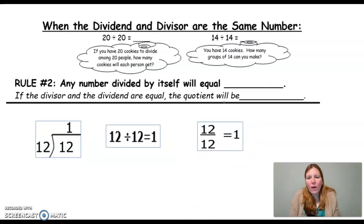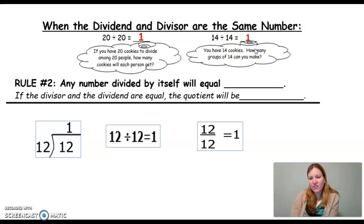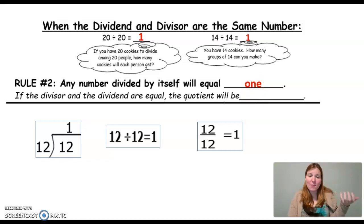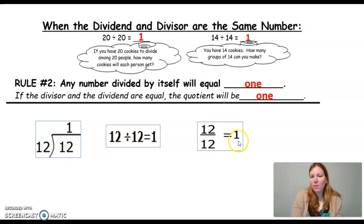Now let's flip that around and think about how we get 1 as the answer to a division problem. That happens when the dividend and the divisor are the same number. If I have 20 cookies to divide among 20 people, how many cookies will each person get? They're each going to end up with 1. Likewise, if I have 14 cookies and I'm sharing them among 14 people, how many groups of 14 can I make? Just one group. So our rule is: any number divided by itself equals 1. Here are all three ways to write that: 12 divided by 12 equals 1 in long division, horizontally, and as a fraction.